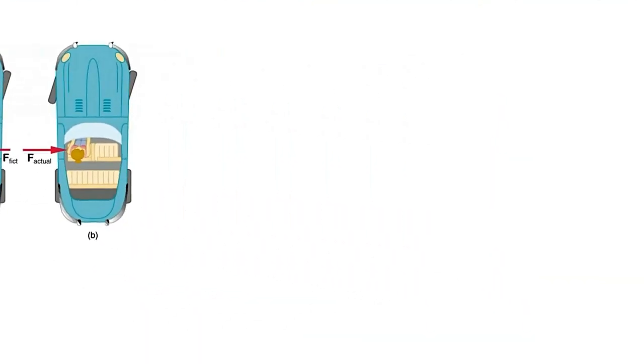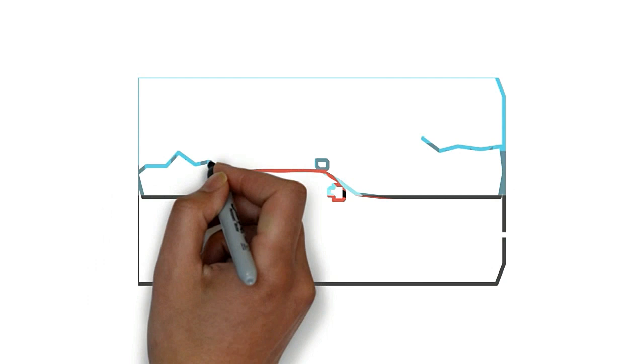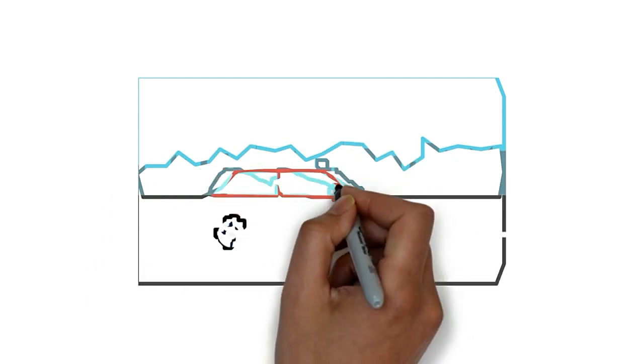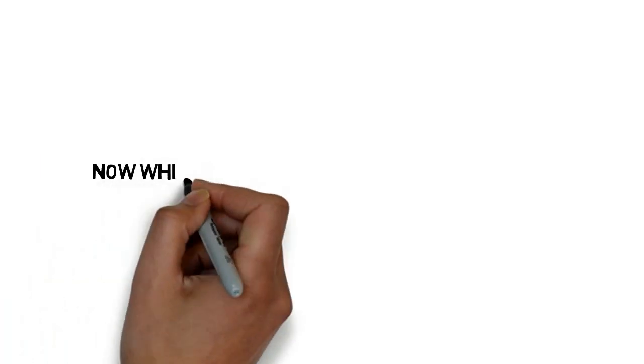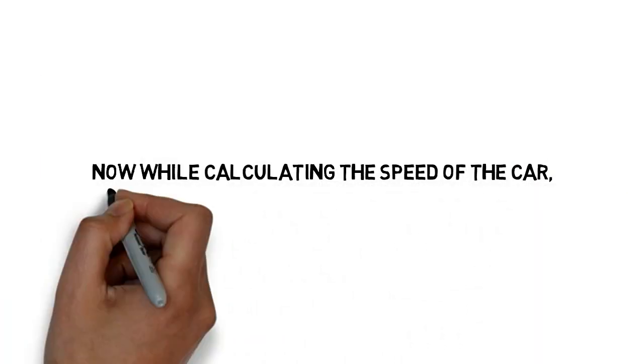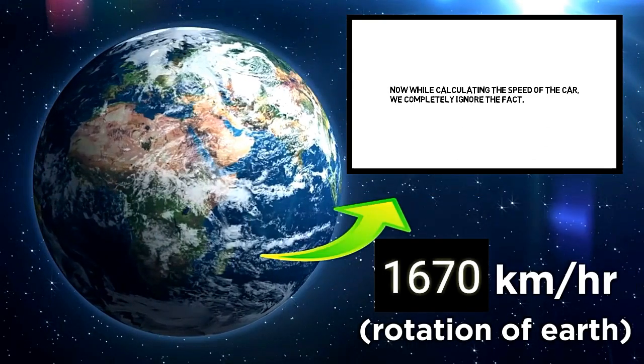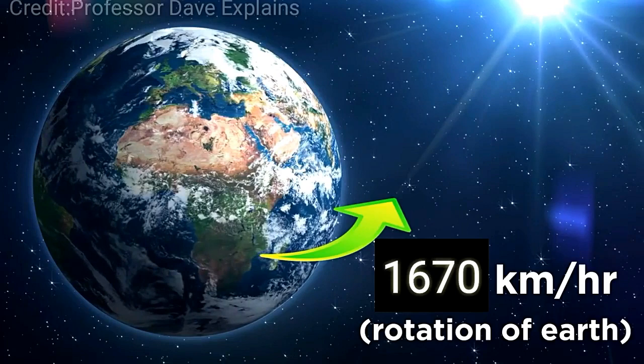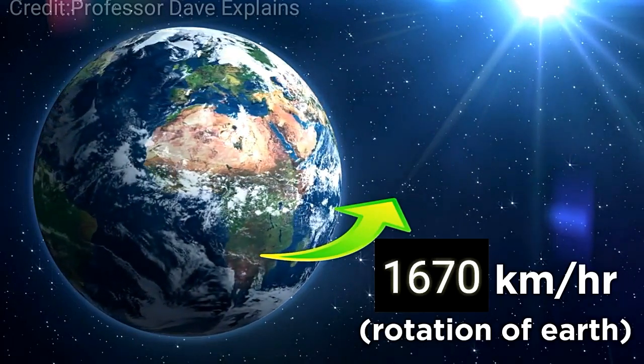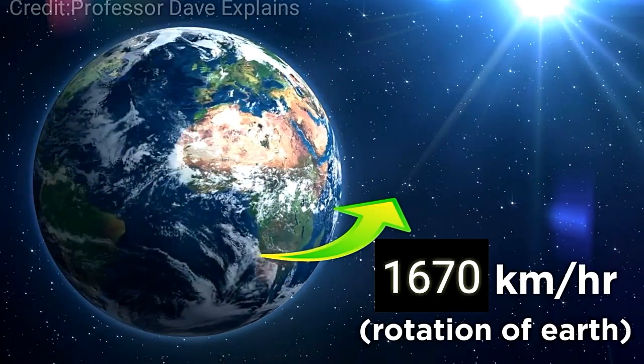Before understanding this, let's understand a case. Let us say a car is moving on a highway with a speed of 100 kilometer per hour. Now while calculating the speed of the car, we completely ignore the fact that the Earth's surface is rotating at the equator at a speed of 1670 kilometer per hour.